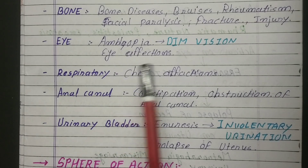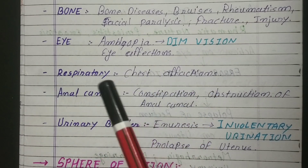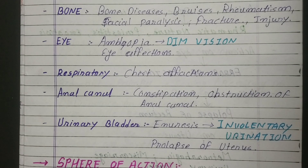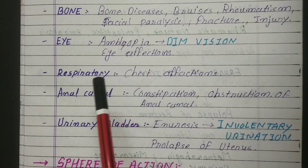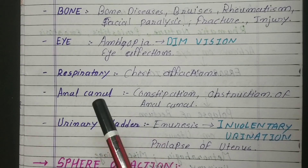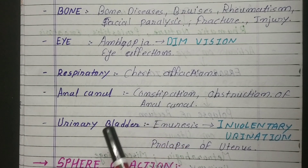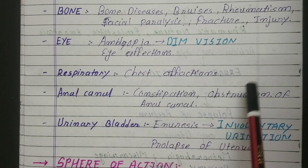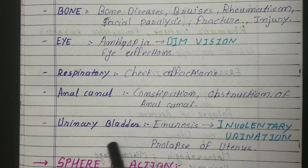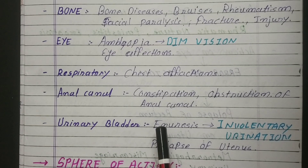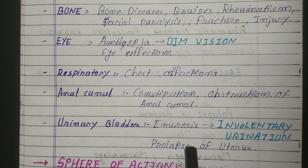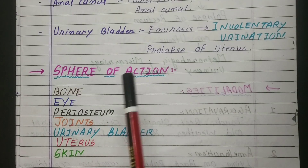Second is eyes. For which eye diseases can we give Ruta? These include amblyopia — meaning dim vision. Most medical students have glasses; they experience dim vision, and this medicine is very good for that. Also eye infections and many other eye diseases. Then for the respiratory system: chest infections. In the anal canal: constipation occurs, and when there is obstruction of the anal canal, constipation follows. For the urinary bladder: enuresis, which is involuntary urination — the patient doesn't even realize and urine passes. And prolapse of uterus.